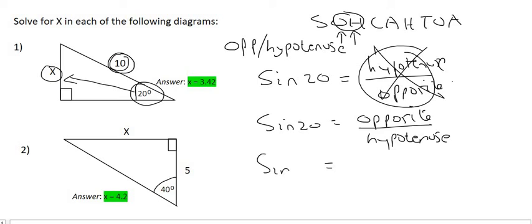All right, so sin 20 is going to be equal to the opposite. So the opposite, so let me just write here sin 20, is the opposite, which is x. And the hypotenuse, well, that's 10.